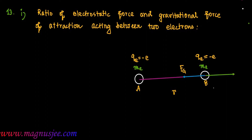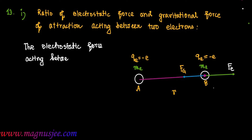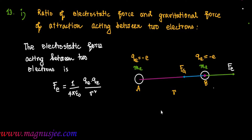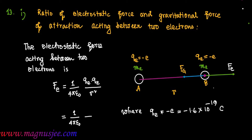Fe is the electrostatic force of repulsion experienced by the second electron at point B due to the electron at point A. We can write the electrostatic force acting between the two electrons: Fe = (1/4πε₀) · (Q_E · Q_E) / R², where Q_E equals minus e, which is minus 1.6 × 10⁻¹⁹ Coulomb. This gives Fe = (1/4πε₀) · (e × e) / R².